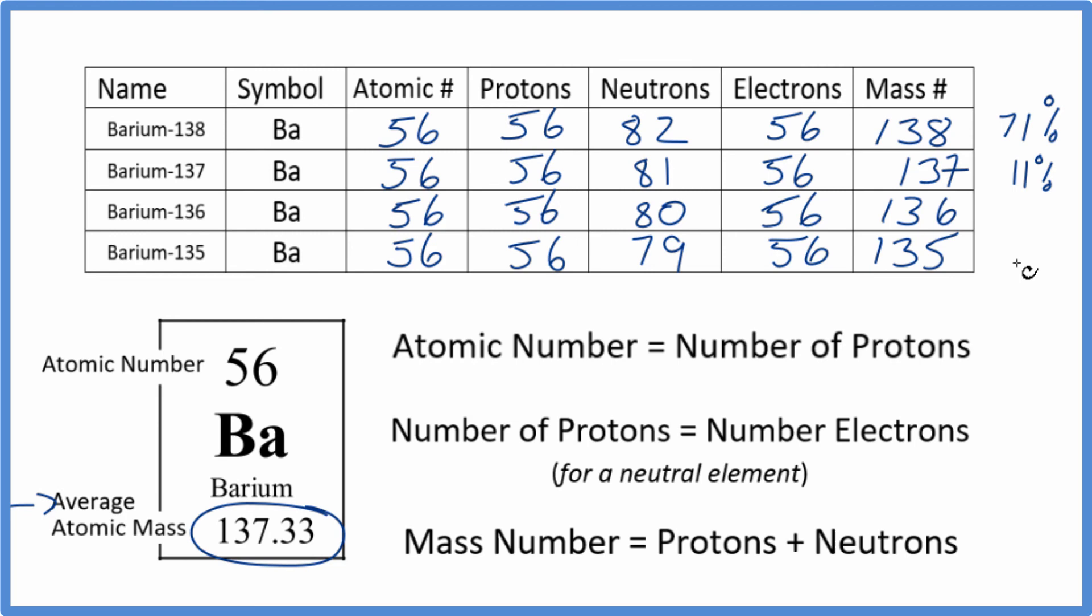So if I was given a table without neutrons or mass number or even this information, I would probably round the mass number to 137. Then I could figure out the number of neutrons pretty easily.